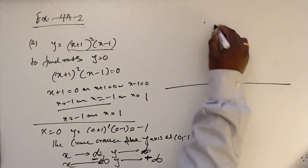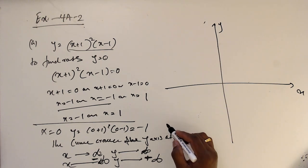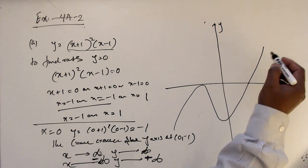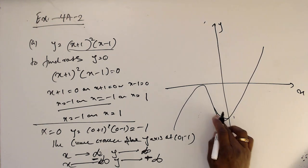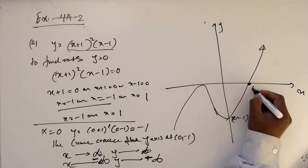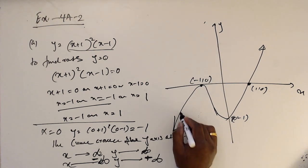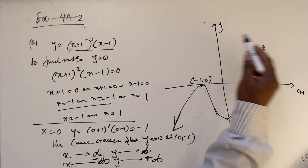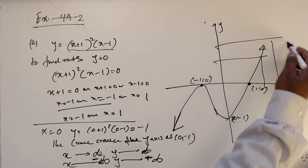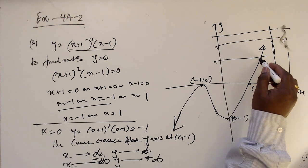Now we draw the graph. This is the x-axis and this is the y-axis. The y-intercept is at (0, minus 1). When y goes to infinity the curve goes in this direction, and when x increases y is also increasing, so the curve goes in this direction.